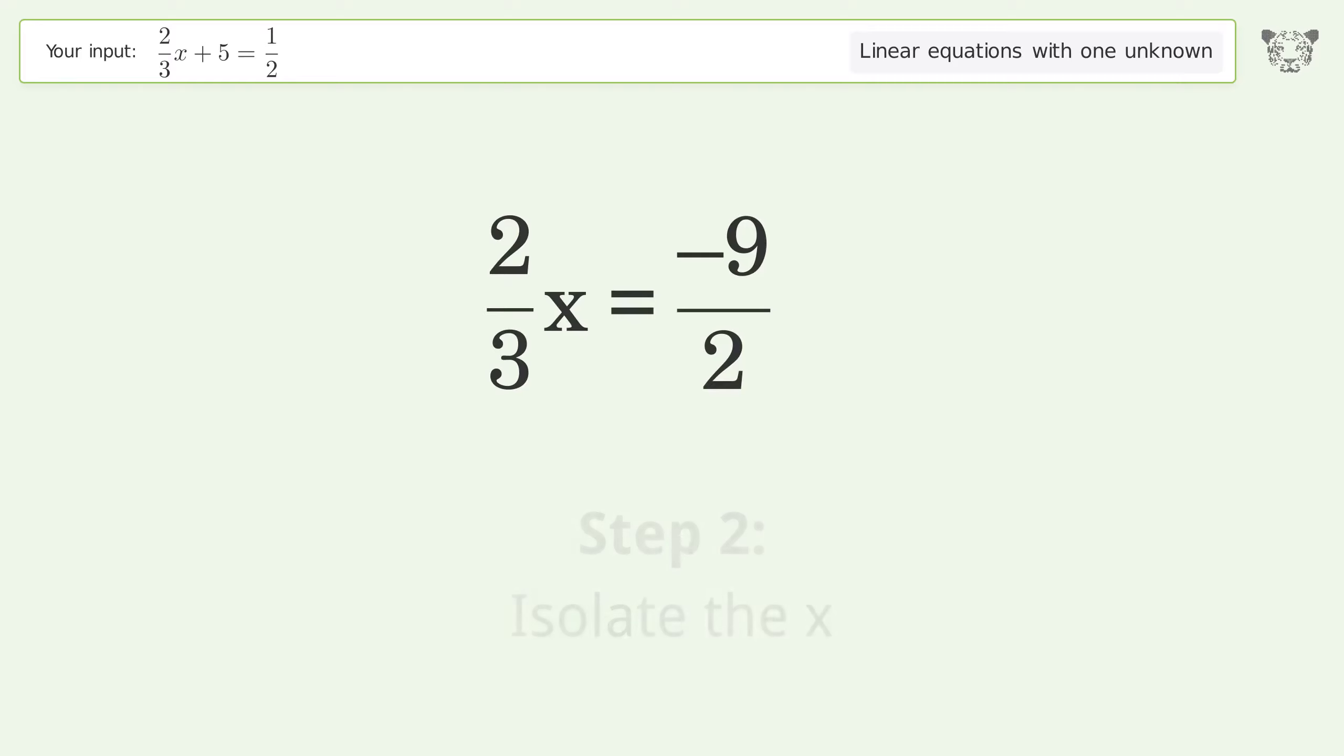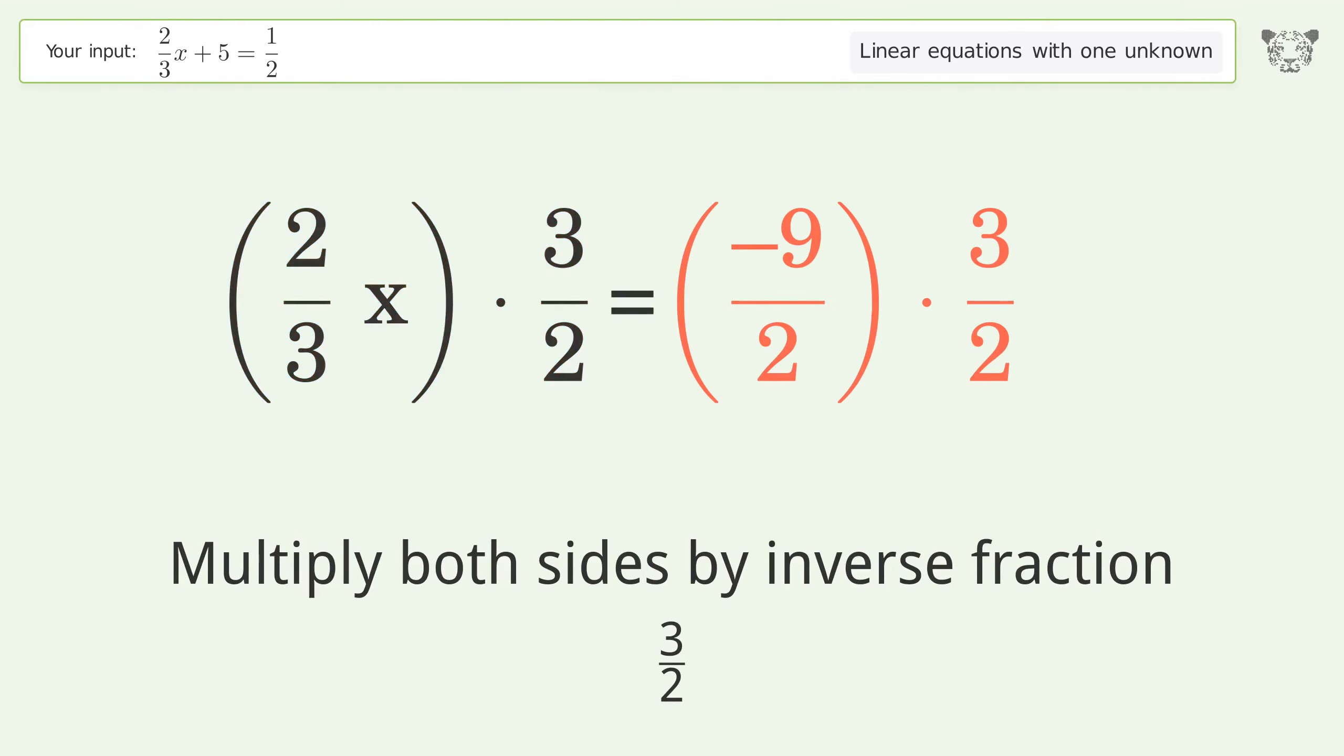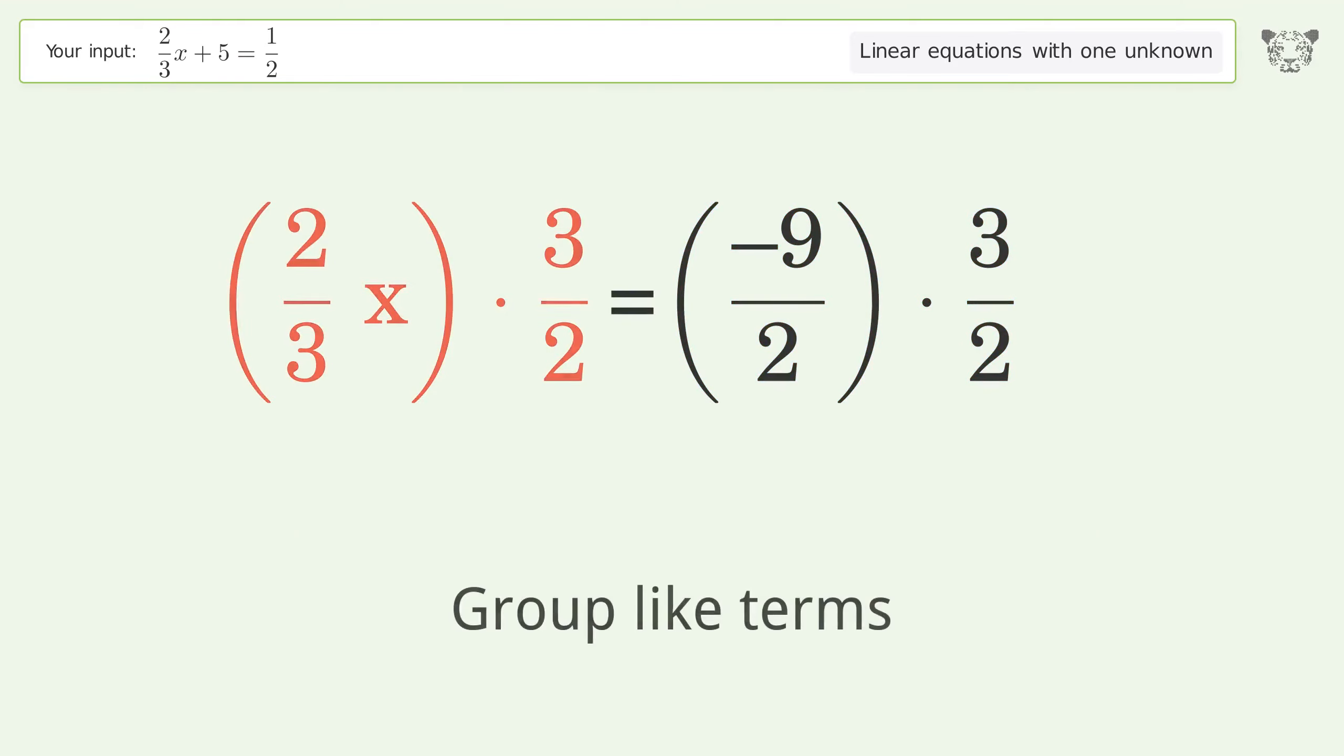Isolate the x by multiplying both sides by the inverse fraction 3 over 2. Group like terms.